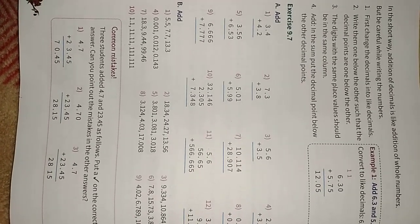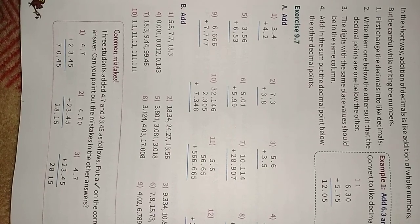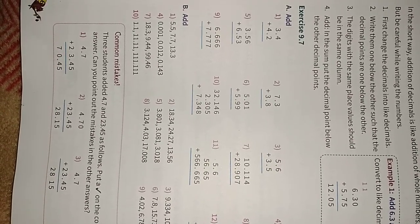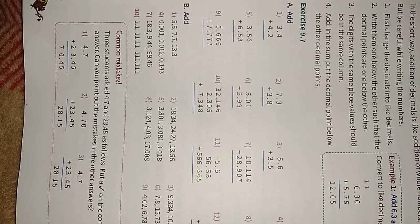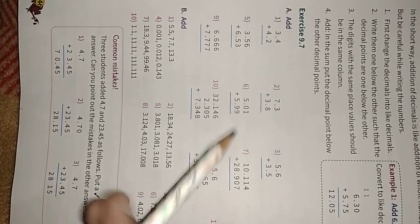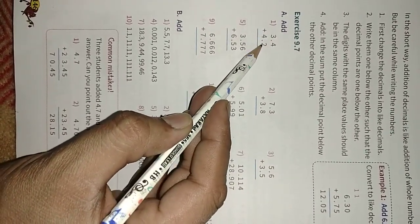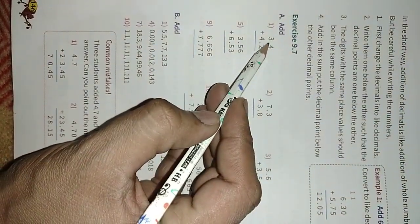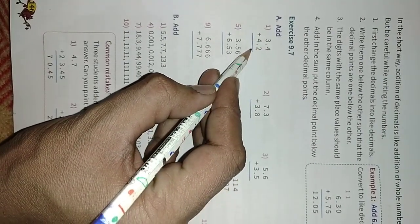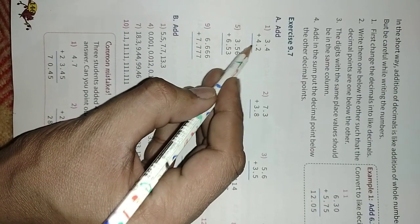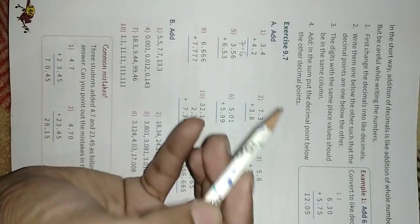Hello students, in the chapter on decimals we have done up to Exercise 9.6. Today we will start with Exercise 9.7 on addition of decimals. We have to add two decimal numbers: 3.4 and 4.2. So 4 plus 2 equals 6. This decimal will carry here, and 4 plus 3 equals 7.